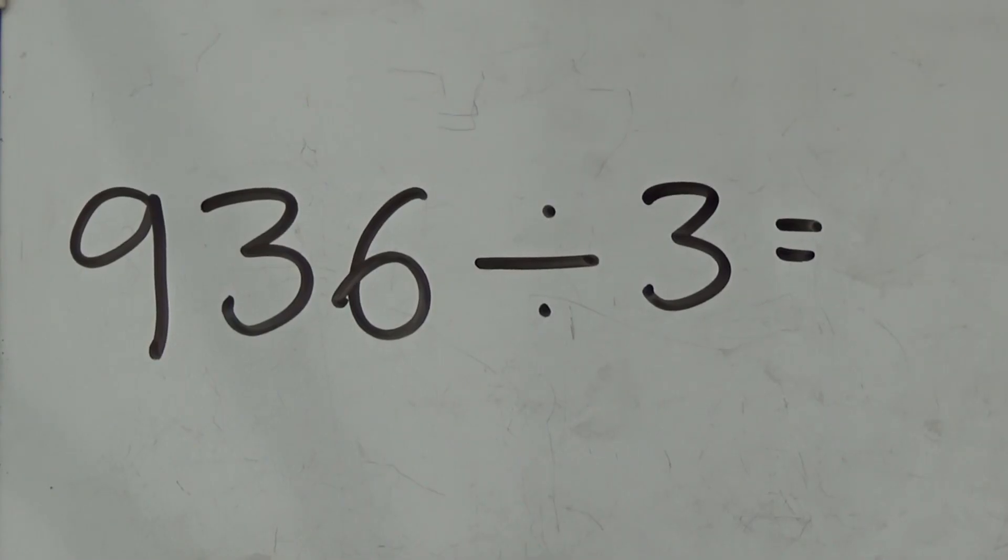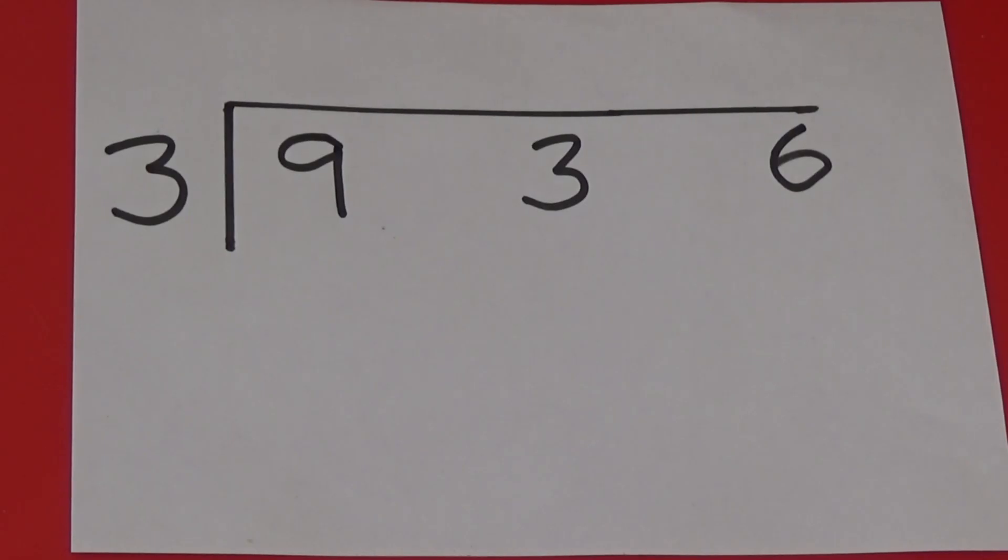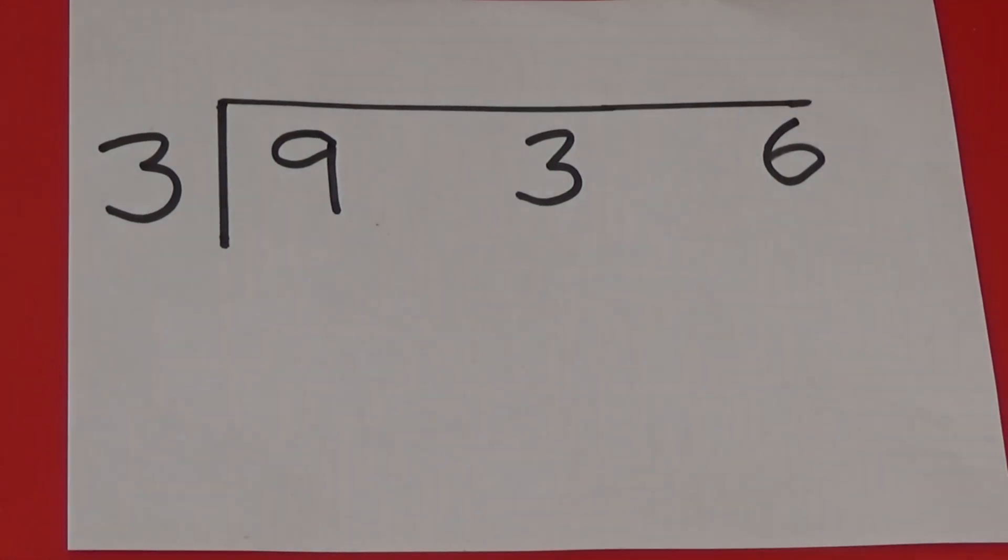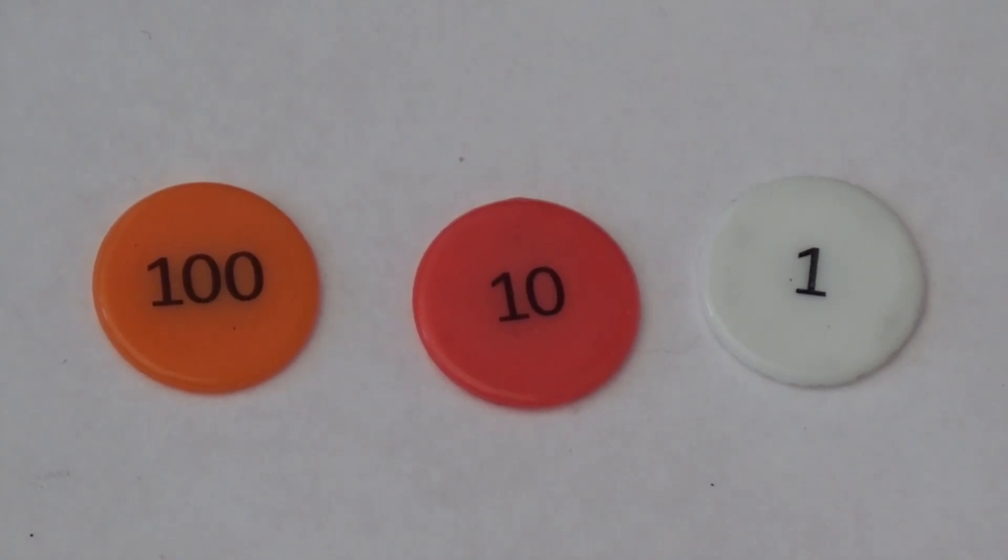I'm going to start by looking at 936 divided by 3. I have drawn out my bus stop and inside I have written 936. Outside the bus stop I have written the number I am dividing by which is 3. I'm going to use place value counters to make the number 936.